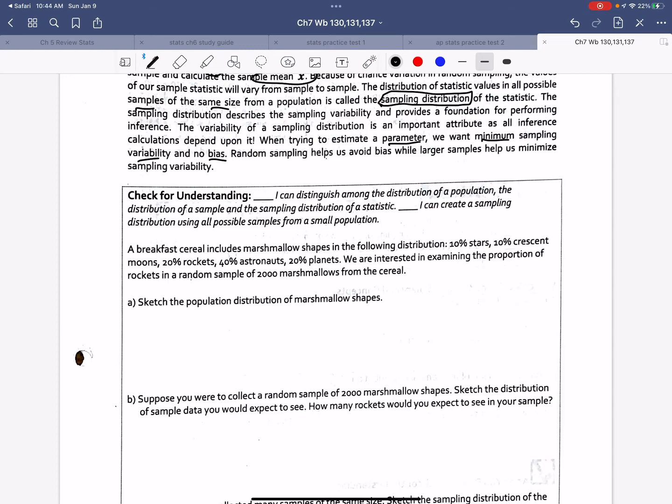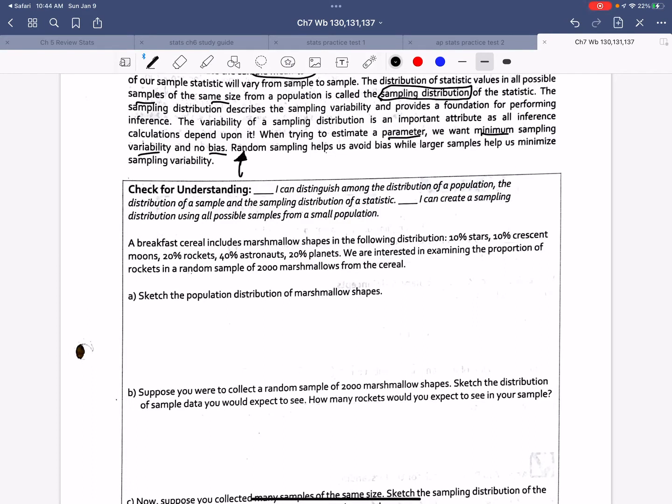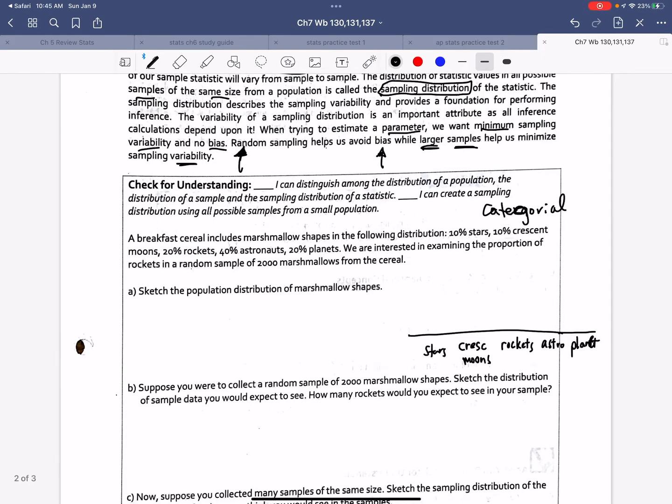So we notice in the Beyonce sample that if we didn't do randomization properly, then we ended up getting bias. And if we don't take large enough samples, we have too much variability. Those are the activities we recognized. So in this example, breakfast cereal including marshmallow shapes, maybe lucky charms. We end up getting 10% stars, 10% crescent moons, 20% rockets, 40% astronauts, and 20% planets. So notice this is categorical data. We have to ask, are you a star? Yes or no? Are you a crescent moon? Yes or no? So this is my proportion.